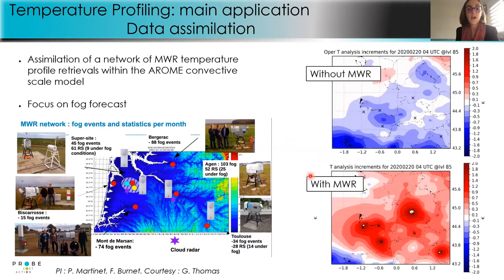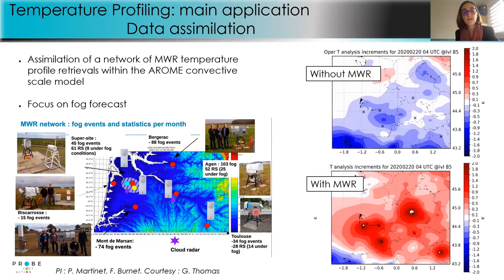The last application of temperature profiling is data assimilation. Many national weather services are working on this, like Météo-Suisse and DWD. In a 2019 fog campaign we deployed eight microwave radiometers at six different sites. The impact on the initial model state shows a large warming of the atmosphere when assimilating microwave radiometer temperature profiles, as demonstrated for a post-frontal alarm case in southwest France.